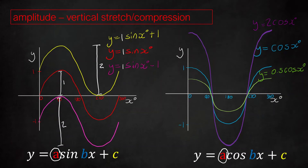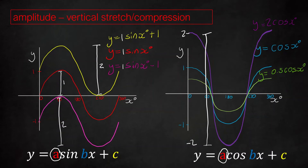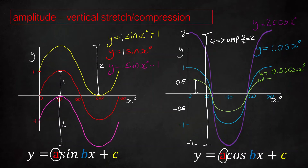When we do the stretches, the numbers in front change. Because A equals 2, the graph is stretched by 2 and reaches up to a height of 2 and down to minus 2. The difference between top and bottom is now 4, which means the amplitude is 4 over 2, which is 2. For the 0.5 case, the amplitude is halved to 0.5 — the maximum is 0.5 and the minimum is negative 0.5. The distance between the middle and the top is 0.5, and between the bottom and the top is 1, so halving that gives an amplitude of 0.5.